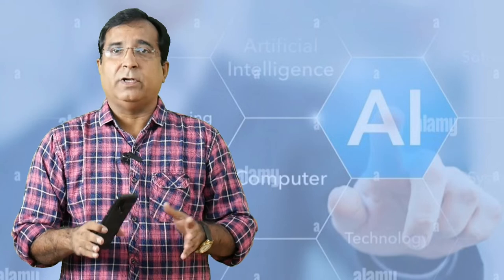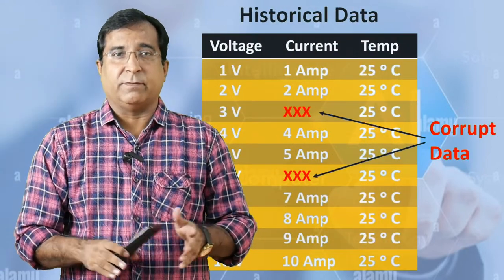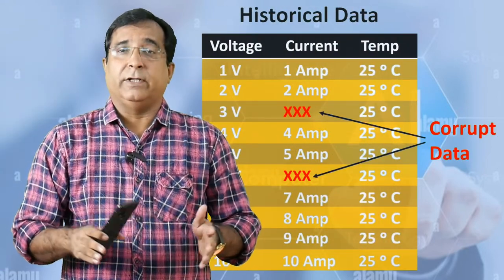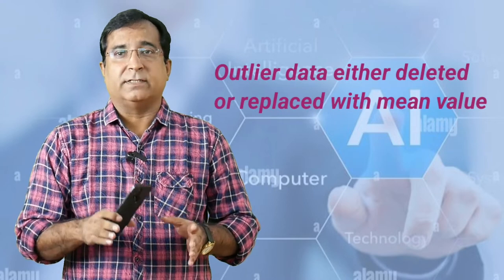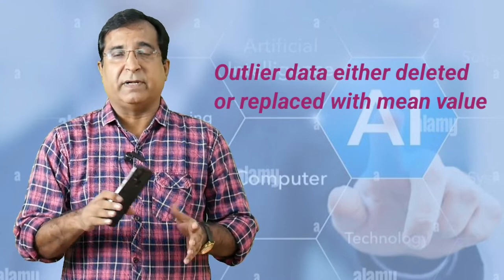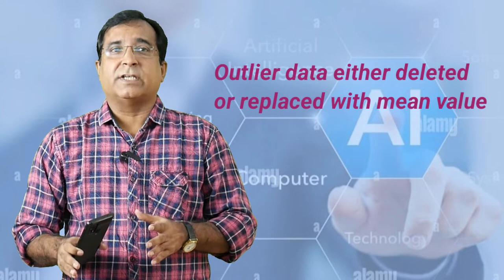But but but things are not that easy. Historical data also contains some corrupt data due to malfunctioning of sensor or electrical interference or something. So the AI model may get trained wrongly or behave abruptly. So before training AI model these values are identified as outliers and are deleted or replaced with the mean value of that parameter. This process is called pre-processing or cleaning the data and then it is fed to the AI model. After training and testing I can deploy this AI model in process plant to predict the behavior of the process.